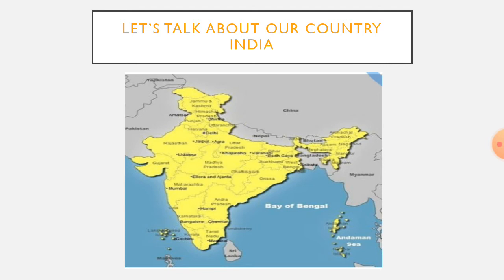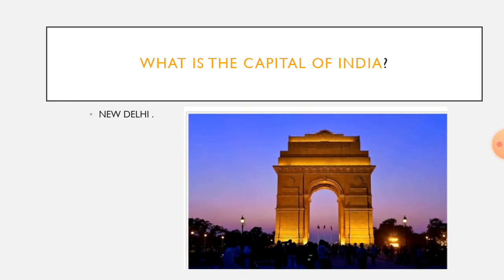The map of India. What is the name of our country? The name of our country is India. What is the capital of India? It's New Delhi. New Delhi is the capital of India. You can see here the picture of India Gate.